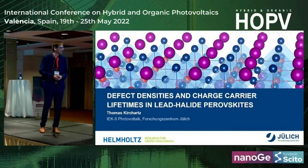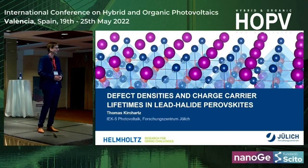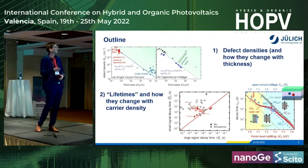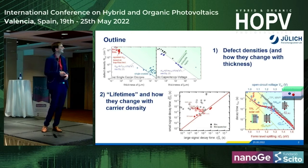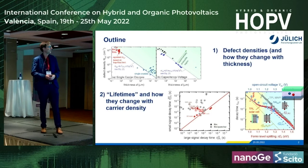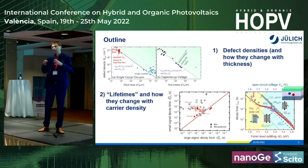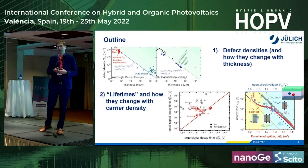My talk will be about defect densities and charge carrier lifetimes in perovskite solar cells, and I'll essentially have two parts. The first part will be about how to measure defect densities and what can go wrong when you do. P.S. Barnes already had a brief look at that on one of his slides on Monday morning. The second part will be more on the topic of charge carrier lifetimes: how do we measure them, can we measure them in devices, what can we learn, and what can go wrong?